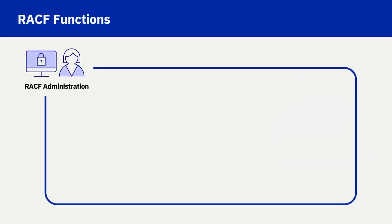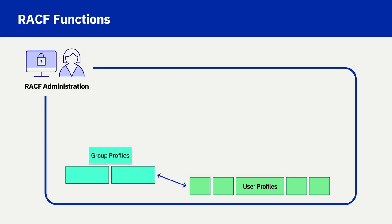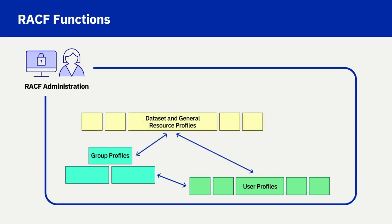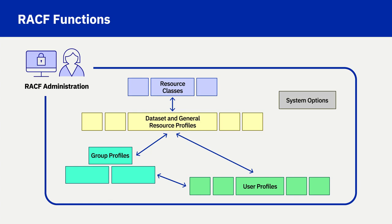The diagram shows an overview of the RACF structure. User profiles are the defined subjects. Group profiles represent a named collection of defined subjects, where the subjects have permission to objects as a result of the named group profile having permission to the defined objects. Data set and general resource profiles are the defined objects. The top box, resource classes, can be thought of as a collection of related protected objects. The box without any arrow references, system options, represents the global behavior option settings that can be customized to toggle on or off specific control over the entire security environment.